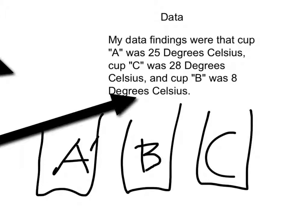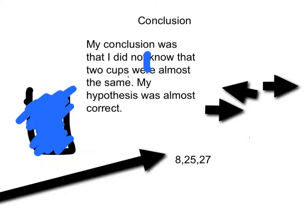My data findings were that cup A was 25 degrees Celsius, cup C was 28 degrees Celsius, and cup B was 8 degrees Celsius. My conclusion was that I did not know that the two cups were almost the same.